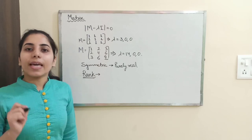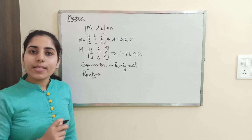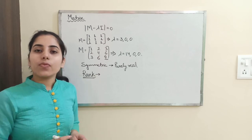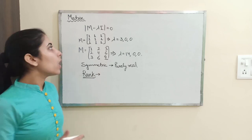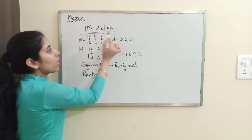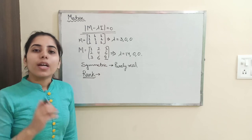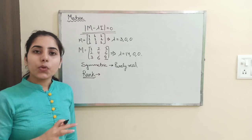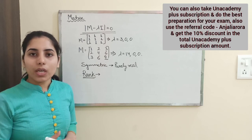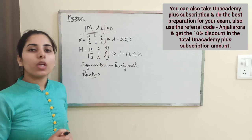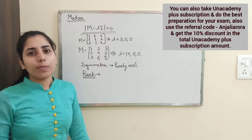Next is the Cayley-Hamilton theorem. Every square matrix satisfies its own characteristic equation, also known as the eigenvalue equation. When you simplify the determinant of (M minus lambda I) equals zero, you get a polynomial in lambda. By the Cayley-Hamilton theorem, if you substitute M in place of lambda in that polynomial, the resulting matrix equation holds true. This is a very important theorem.